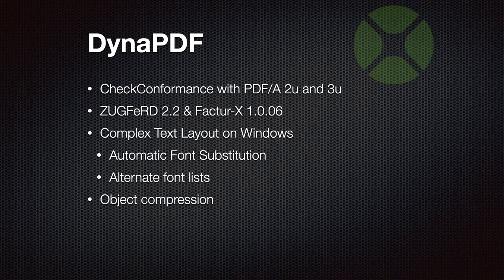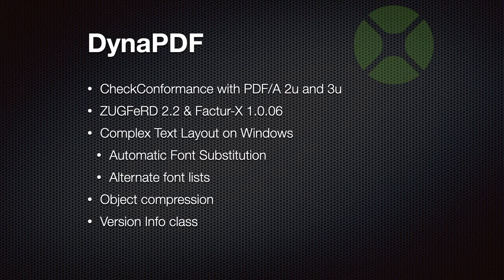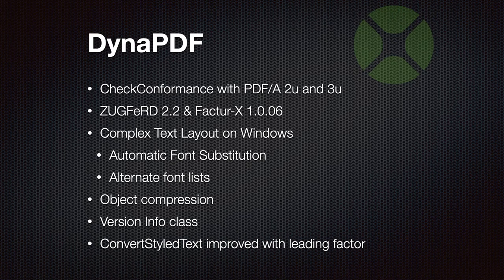We also got object compression which makes the PDF much smaller by compressing more parts of the document. Then we got a version info class to tell you exactly about the current PDF you are producing as well as any imported PDF — the exact PDF version, standard, and feature flags it has, so you can see if an existing PDF is PDF/A for example. We also upgraded our ConvertStyledText function to allow you to specify the leading factor which defines line spacing, so you can decide which line spacing to use when converting text from a text area into your PDF document.